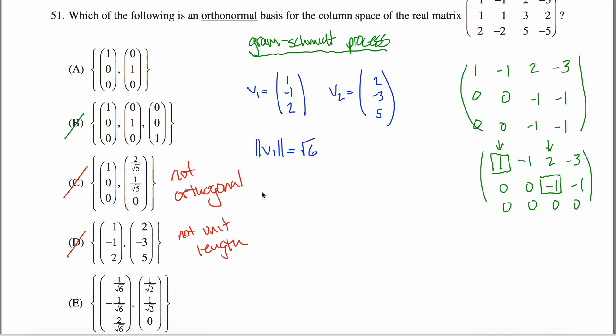So what I will call U1 would be one over root six times this column vector one, negative one, two. So if you feel like it, you could rewrite that as one over root six, negative one over root six, and two over root six. You can do that if you felt like it. But it's also nice to have it in this form when you do the rest of this work.